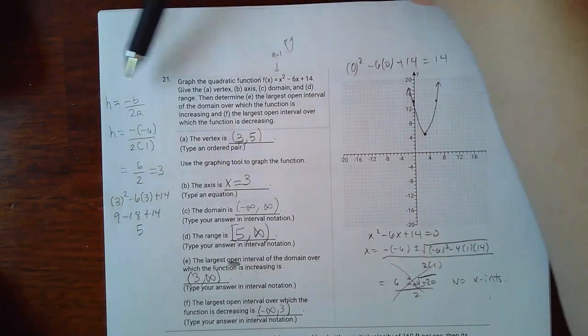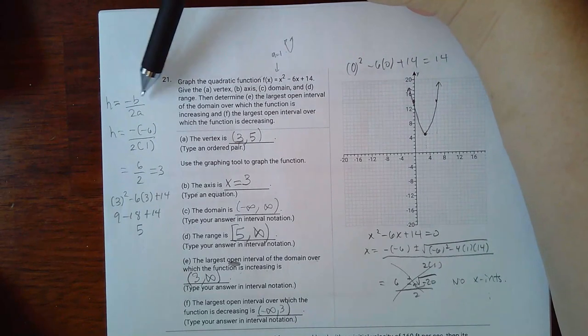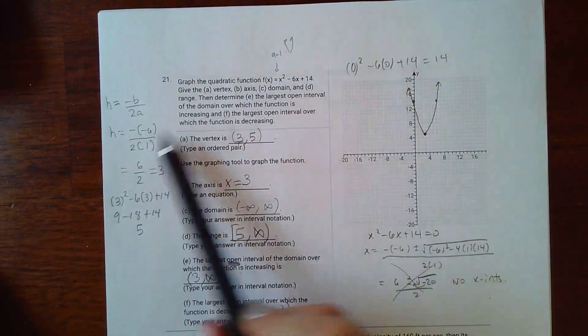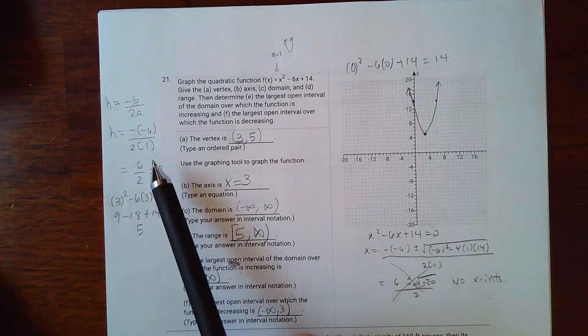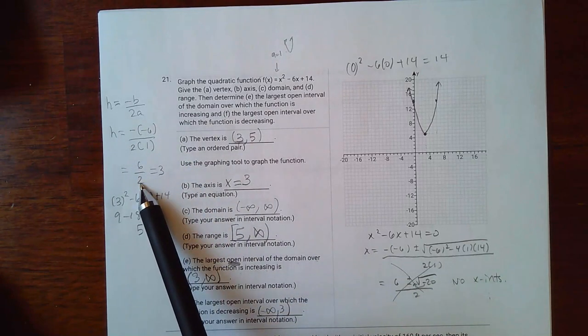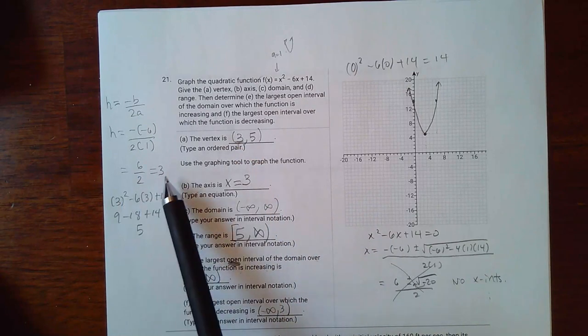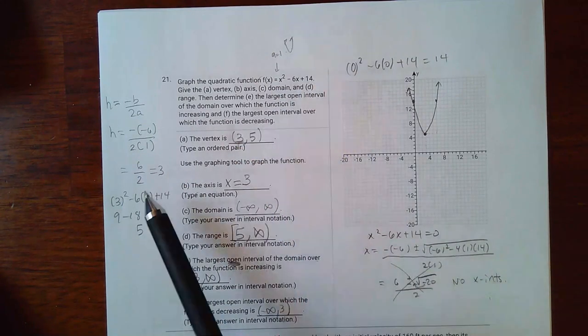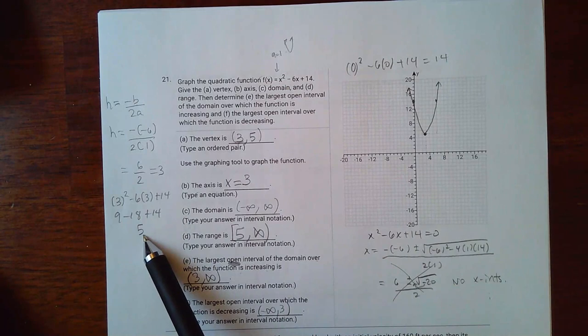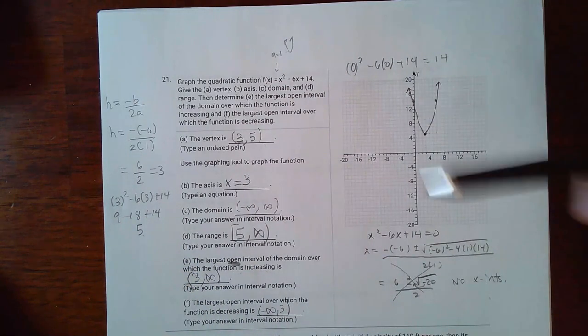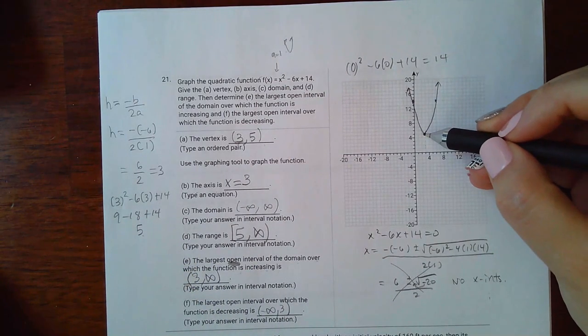So I did h equals negative b over 2a, so the b is negative 6, the a is positive 1, which gave me 6 over 2 and that ended up with 3. And in order for me to get the y coordinate I had to plug 3 into the function, and so I got the y value of 5. So that made me go to (3, 5).